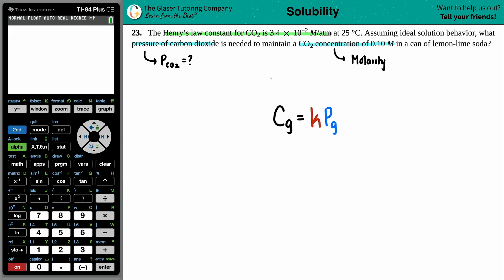Now the C, capital C, stands for the concentration. And the G just stands for the gas. So we're only dealing with gases here. Henry's Law constant is specific for gases. So this is concentration of the gas.